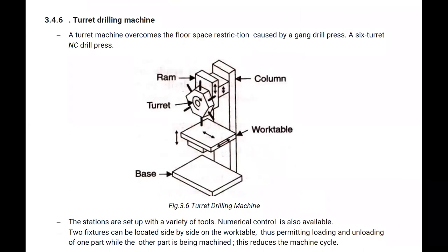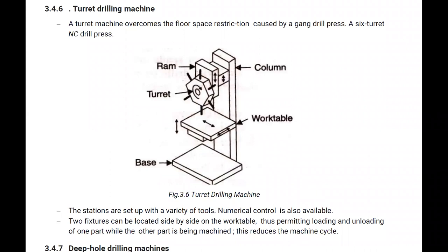Another drilling machine is the turret drilling machine. Similar to the turret lathe, the turret machine overcomes the floor space restrictions caused by gang drilling. A six-station turret NC drill press is shown in the figure. The stations are set up with a variety of tools and NC control is also available. Two fixtures can be located side by side on the work table, permitting loading and unloading of one part while the other is being machined.